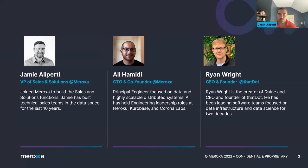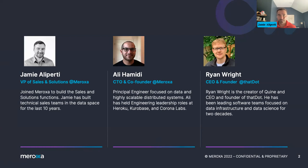Thanks both of you for joining us today. We have two founders who are experts in large-scale data and how to process it and make insights out of it. Today we're going to focus on how to handle categorical data and find anomalies. Before we do that, why don't we talk a little bit about the two companies being represented here? Ali, can you give us an idea of what Maroxa does and why you founded it?